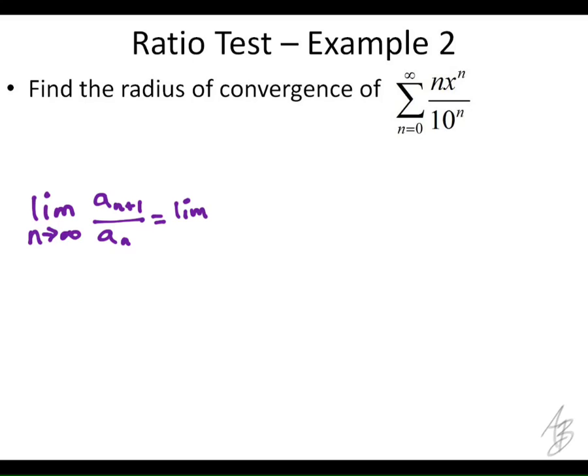And so in this particular problem, what is the n plus first term going to be? And then the nth term is going to be what? Yeah, it's just this general term right here. So n times x to the n over 10 to the n.